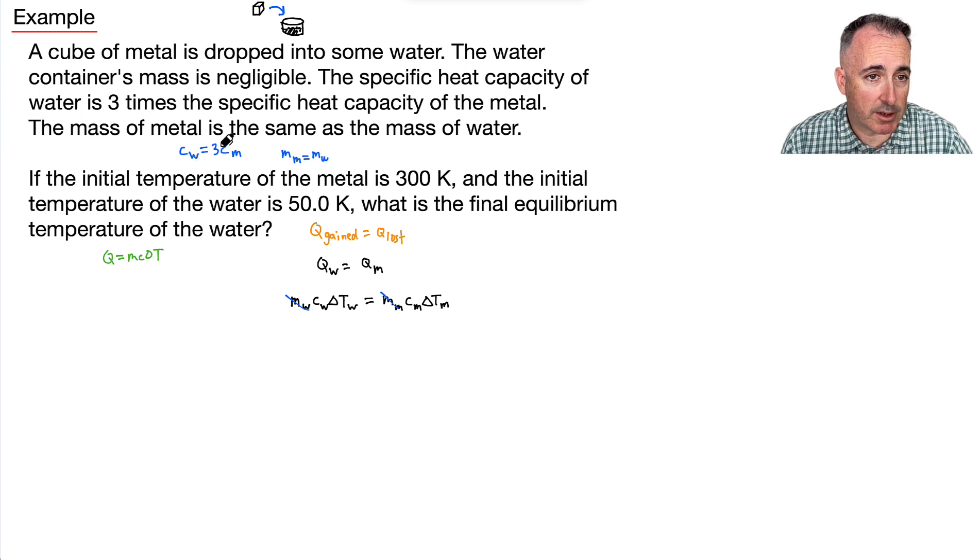And instead of CW, I'm going to put in 3CM. Now I've got to deal with the change in temperature as well. So what's the temperature change of the water? Well, it's going to go from 50 all the way up to some equilibrium temperature. I'm going to call it T. And that means that one will be T minus 50, because it'll start off at something small and go big. Well, that whole thing will equal Cm times delta Tm. Now, this one starts at 300. So I'll put the 300 first. And I subtract from that the equilibrium temperature, because by necessity, the temperature must be less, like the equilibrium must be less than the starting one.